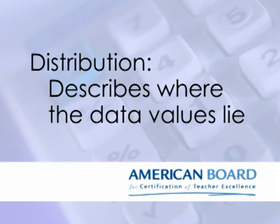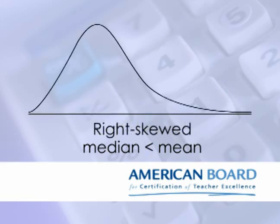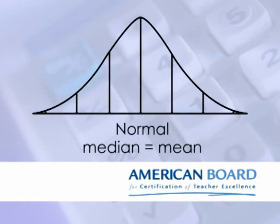To speak more about the standard deviation, we need to first discuss distributions. A data distribution is related to the histograms we talked about earlier — it's a quick way to visualize where all of the data values in a set lie. A data distribution that looks like this is said to be left skewed, or negatively skewed, because its median is greater than its mean. The opposite would be a right, or positively skewed distribution, in which the median is less than the mean. If a distribution is not skewed, it's described as normal and is often referred to as a bell-shaped curve. Bell-shaped or normal distributions are of particular interest when it comes to standardized or norm-referenced tests.